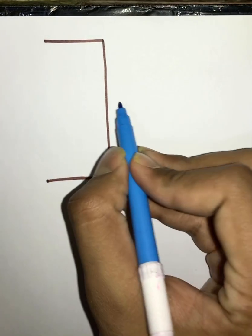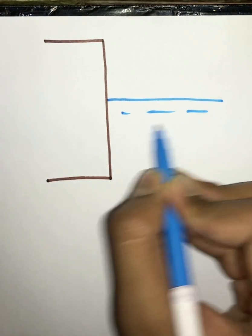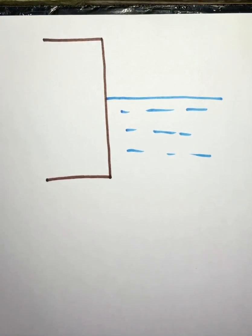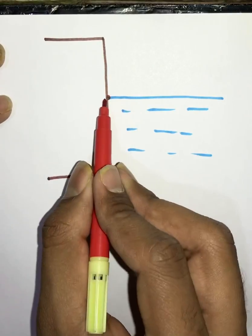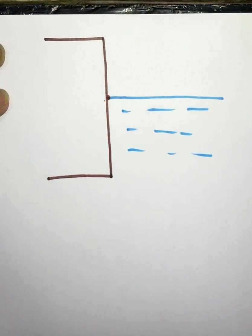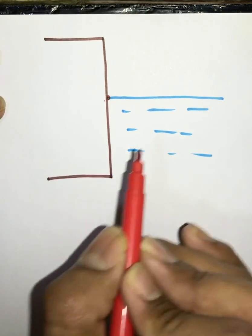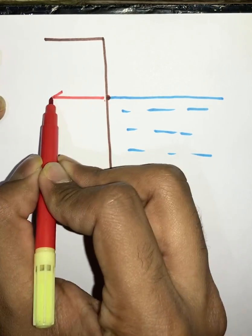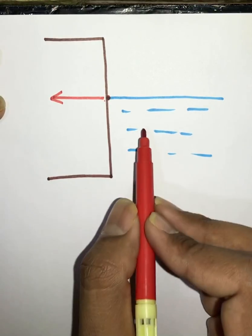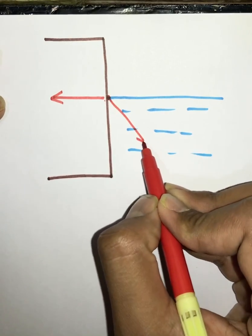Welcome back to the channel. In this video we will see the angle of contact. Consider a solid surface where water is touching it. Due to surface tension, a molecule present at the interface touches both water molecules and solid molecules. It experiences a force from the solid in the horizontal direction, and a force from the water molecules at an angle of 45 degrees to the solid surface.